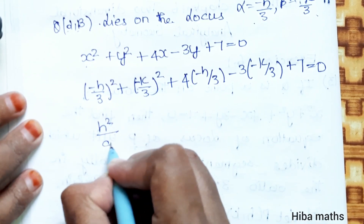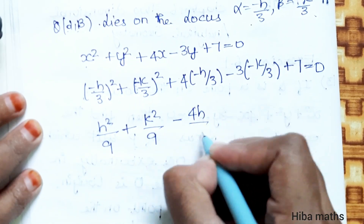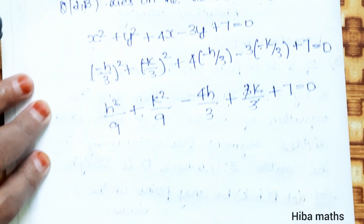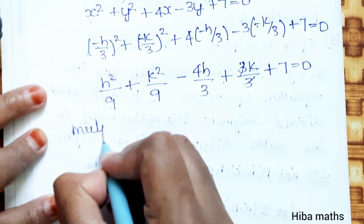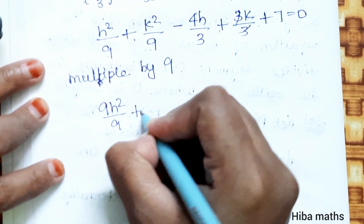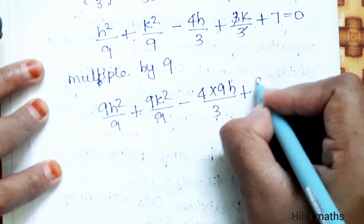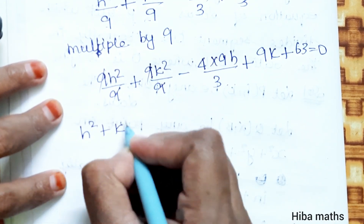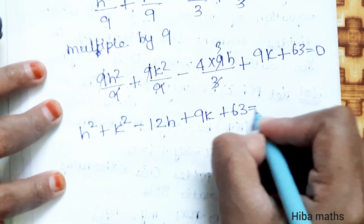This gives h²/9 + k²/9 - 4h/3 + 3k/3 + 7 = 0. Multiplying throughout by 9: h² + k² - 12h + 9k + 63 = 0.